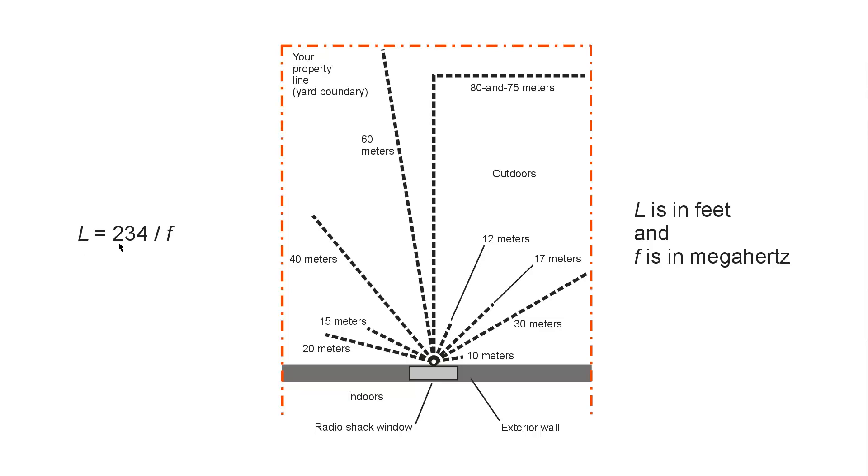L, length, equals 234 divided by F, the frequency in megahertz. At 40 meters, you can assume F to be 7, for example. 15 meters, F you can assume to be 21. 20 meters, you can assume it to be 14. 60 meters, you can assume it to be about 5. 80 and 75, I would say, on the CW part of the band, about 3.6, and on the phone part of the band, about 3.9.